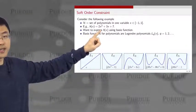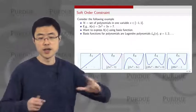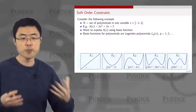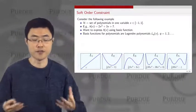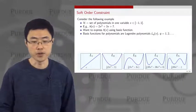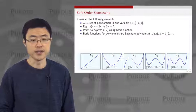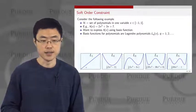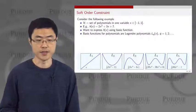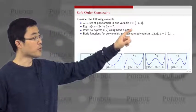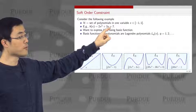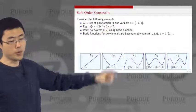Legendre polynomials are orthogonal polynomials and provide a more compact representation than a generic polynomial. If you only use x squared, x, and constants, they are still basis functions but are not orthogonal and are not very compact for representing the one-variable polynomial hypothesis we want to study.